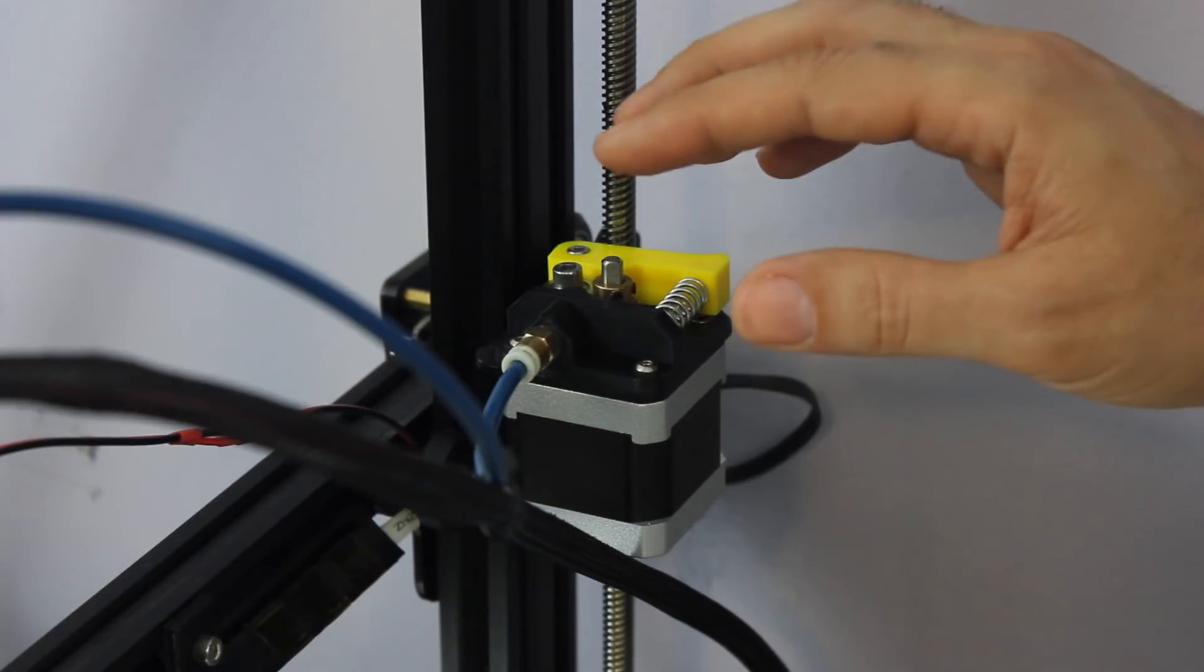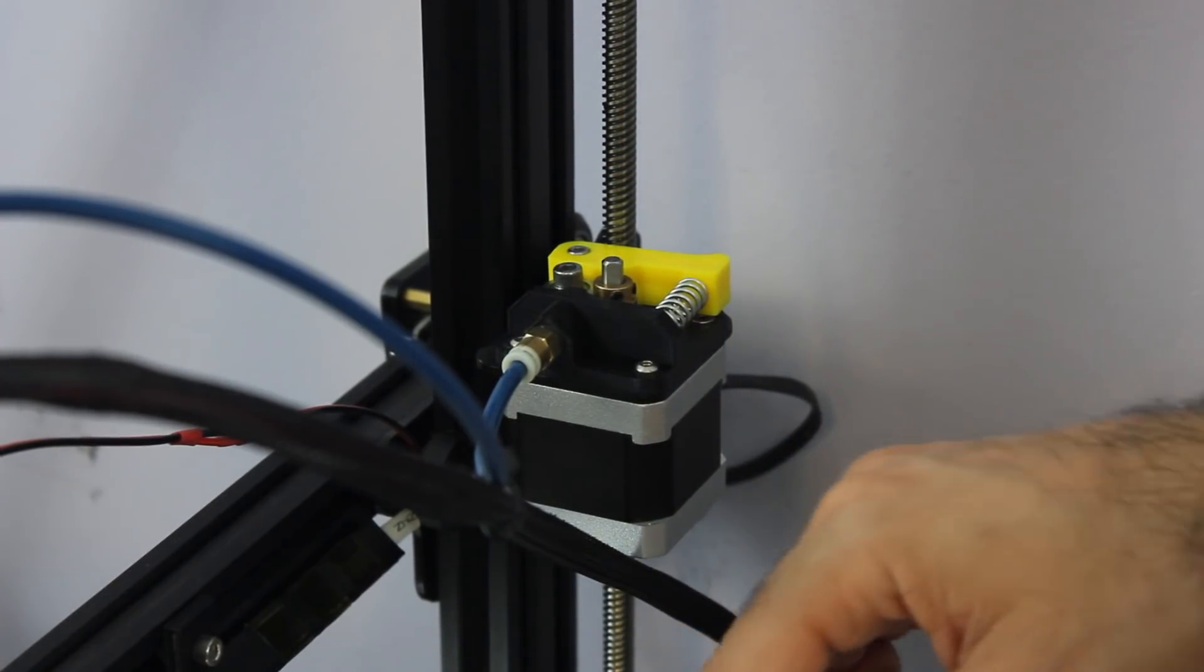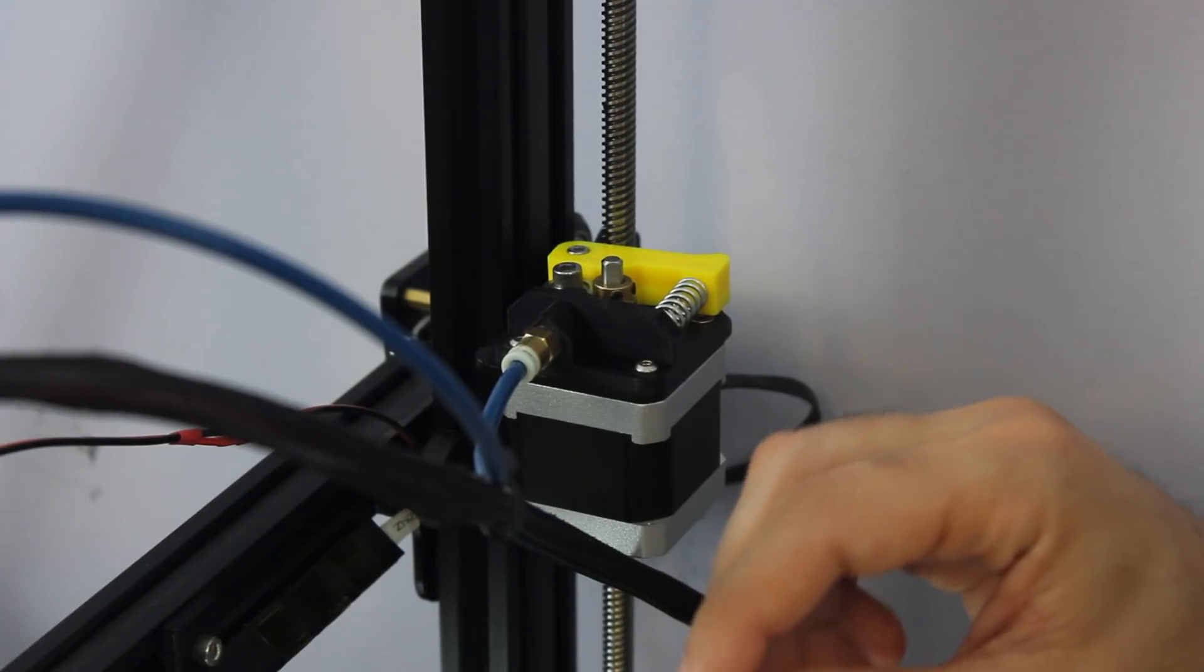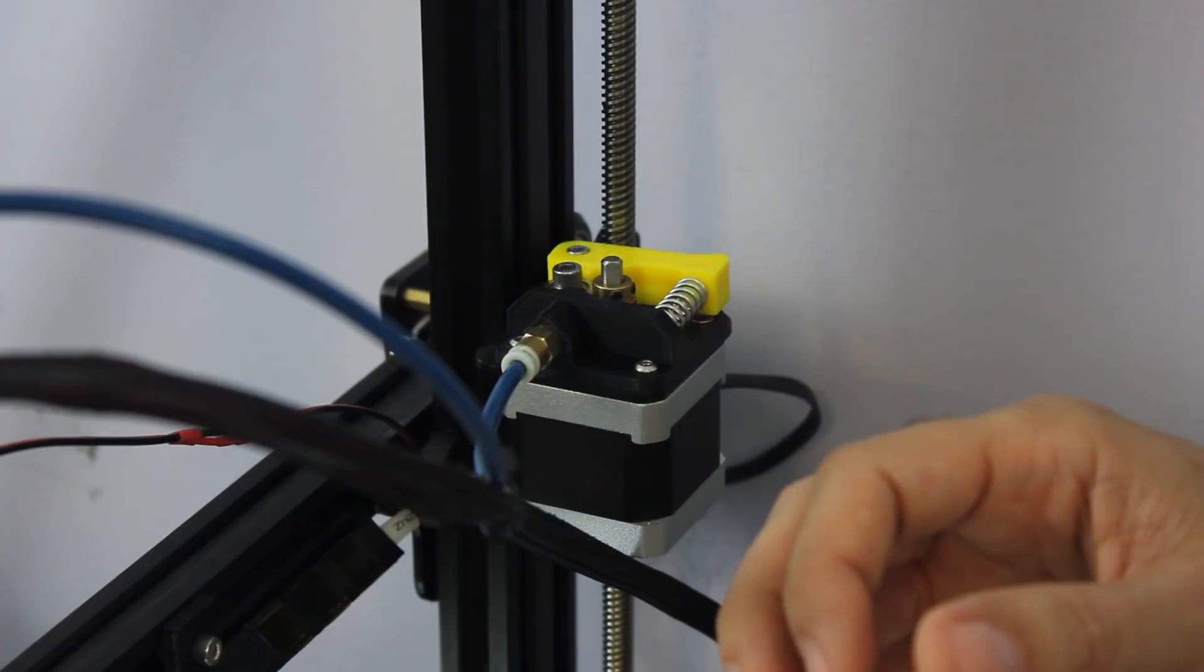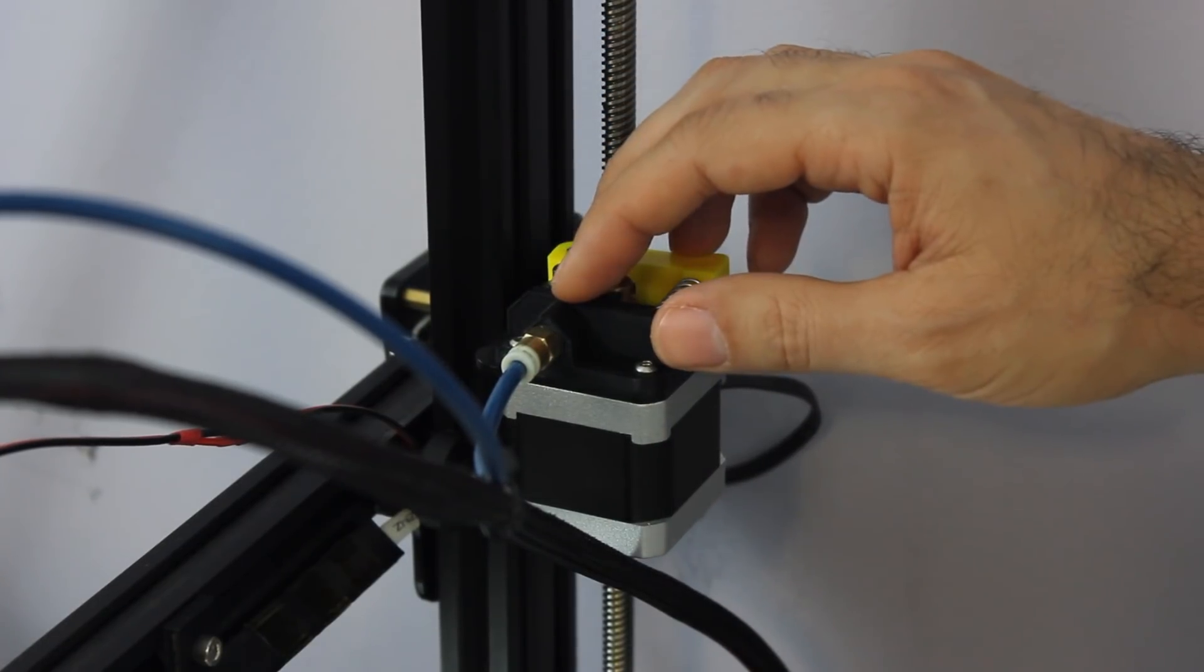And then I noticed on another model, the spacing on it got further apart the smaller that the diameter of the model was, and so that kind of pointed me to the extruder again.